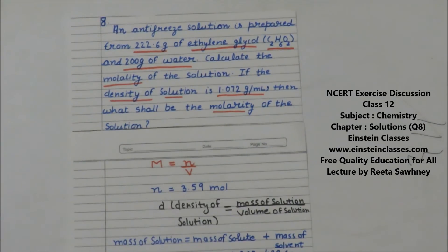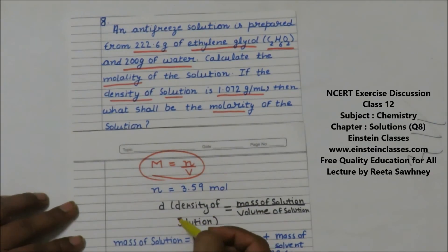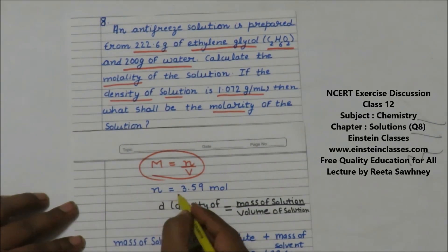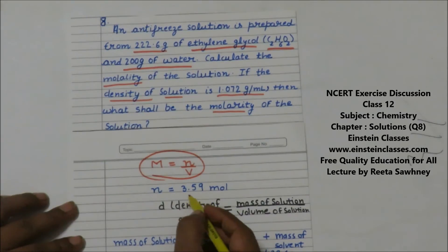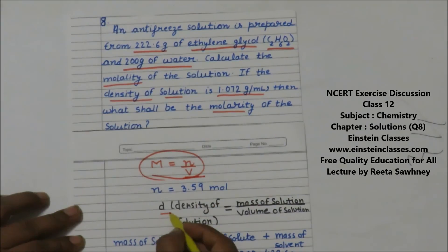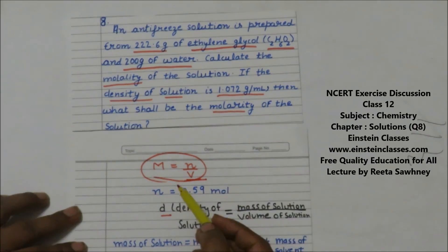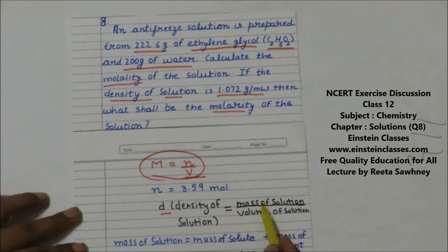Now we are going to find out the molarity of the solution. Molarity is moles of solute divided by the volume of solution. Moles of solute is 3.59, which we already calculated. Now we need to calculate the volume of the solution. We know the density of solution is 1.072 gram per ml.